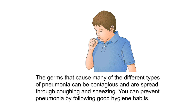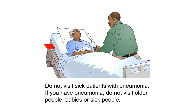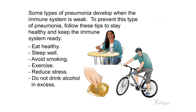The germs that cause many types of pneumonia are contagious and spread through coughing and sneezing. You can prevent pneumonia by following good hygiene habits: cough or sneeze into a tissue, use separate drinking glasses and eating utensils, wash your hands often with warm soapy water, and use alcohol-based gel when soap and water are not available. Do not visit sick patients with pneumonia; if you have pneumonia, do not visit older people, babies, or sick people. Some types of pneumonia develop when the immune system is weak.